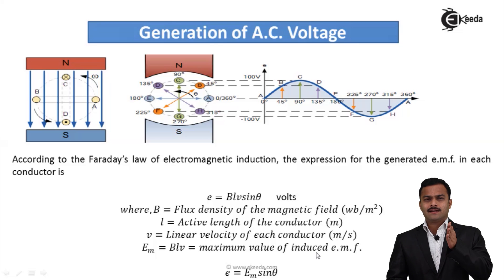So that means whenever a conductor is like this, it will be perpendicular to the magnetic field. At that time, maximum flux will be linked to the conductor giving rise to maximum voltage.